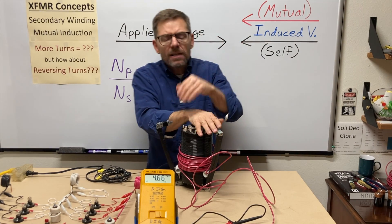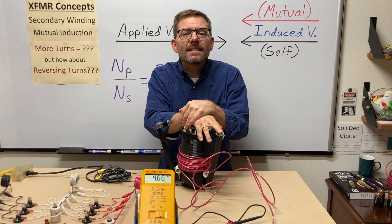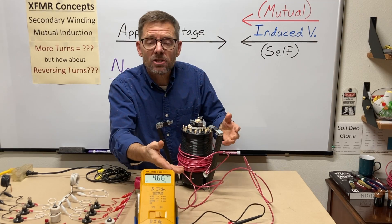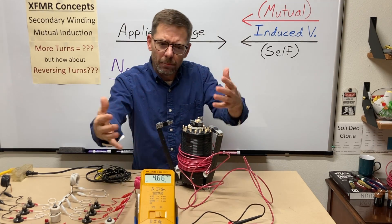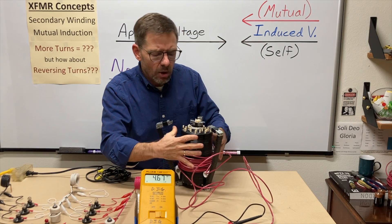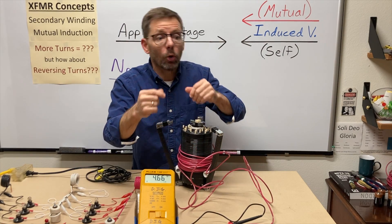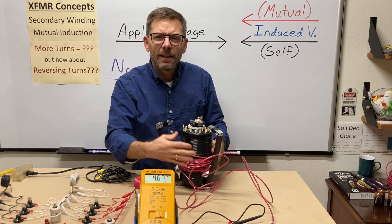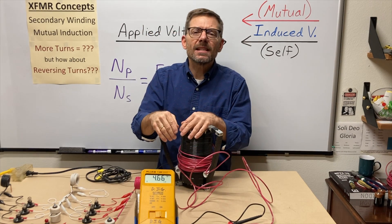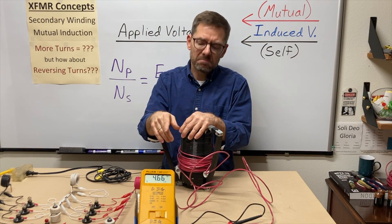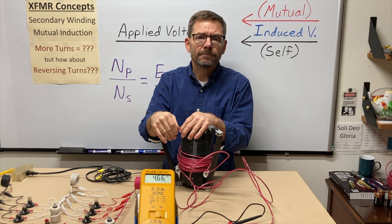My next video will get into taps. Here I can pull turns on and off to change the voltage, but when you buy a transformer they're all fixed. So how can you have variable input or variable output voltages? We use taps — transformer taps — coming up in the next video. Thank you, we'll see you next time.